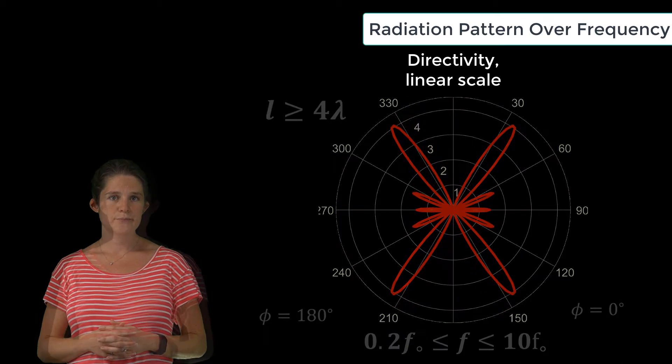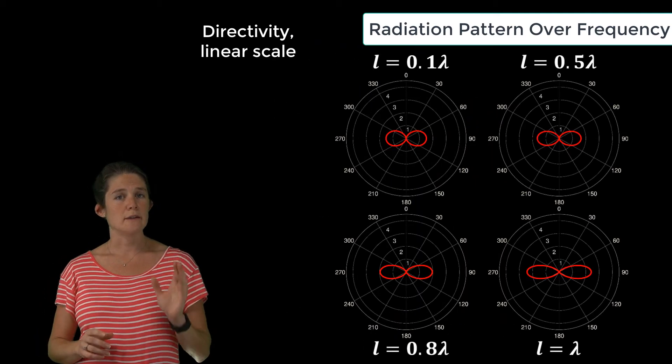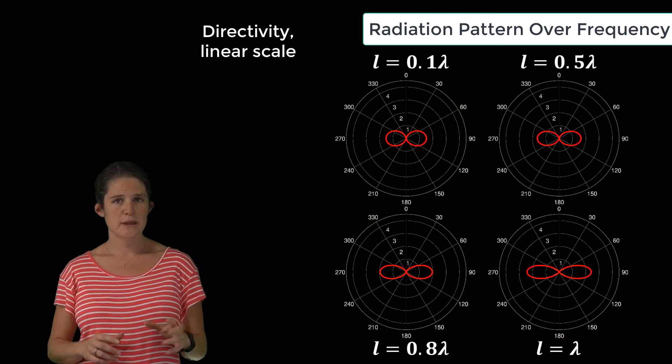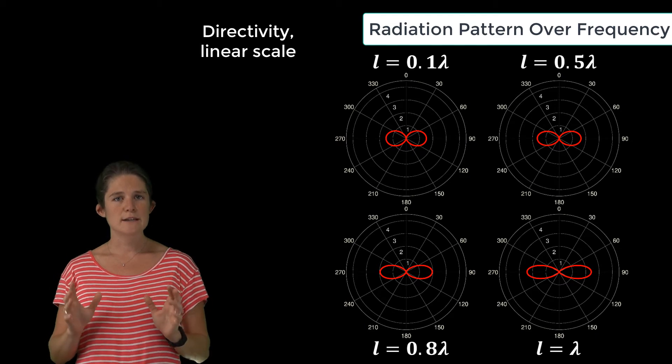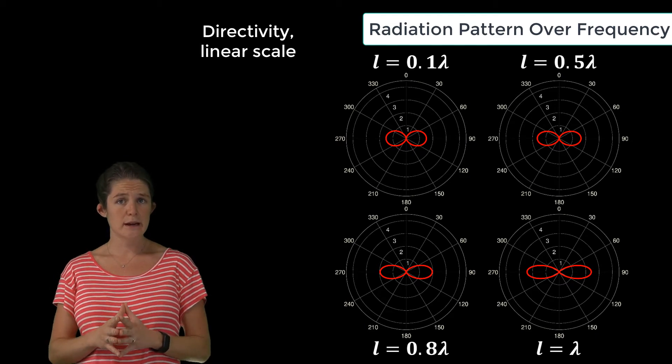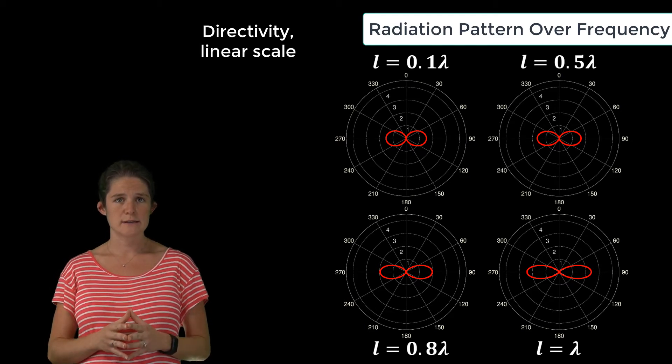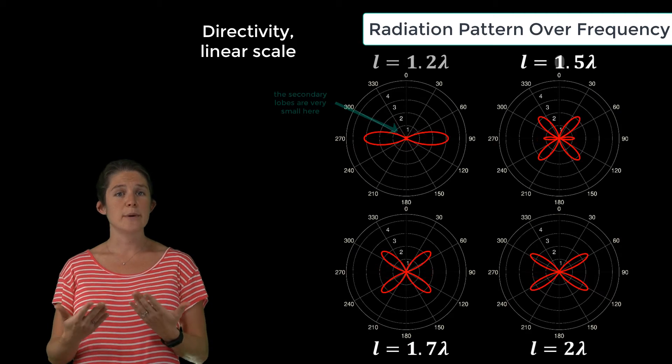You can see that the direction of maximum directivity varies with frequency, as does the value of the maximum directivity and the number of lobes. Notice particularly at the low end of this frequency range, as the antenna goes from 0.1 wavelengths up to one wavelength, the antenna has only one lobe, broadside and symmetric about the z-axis.